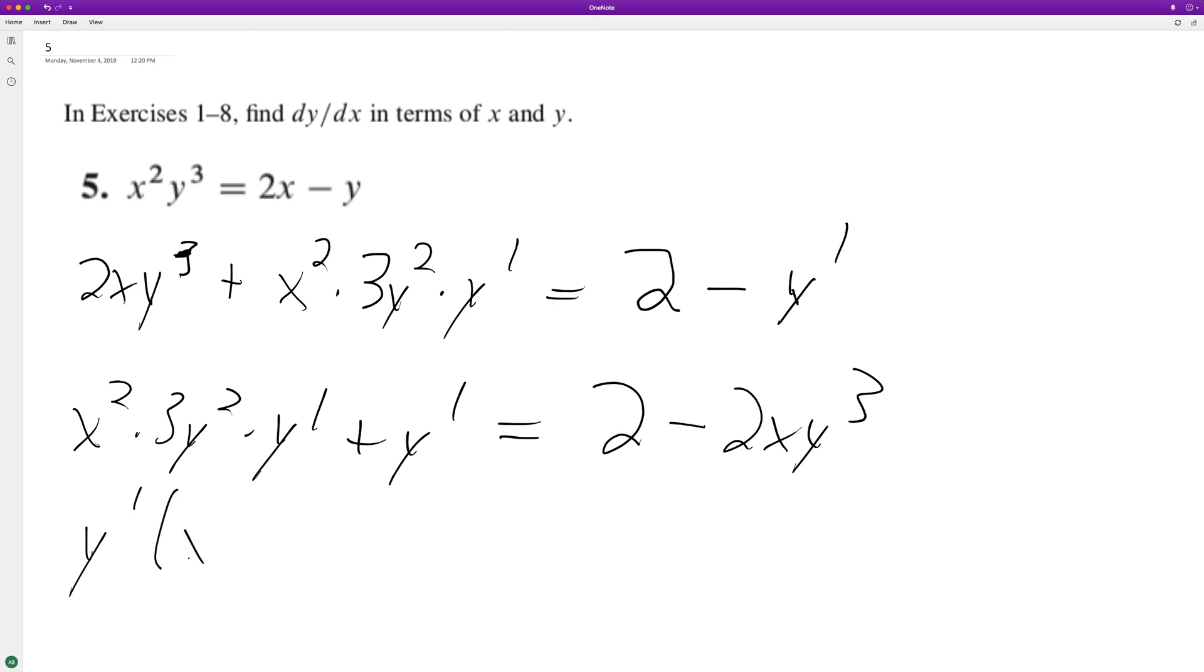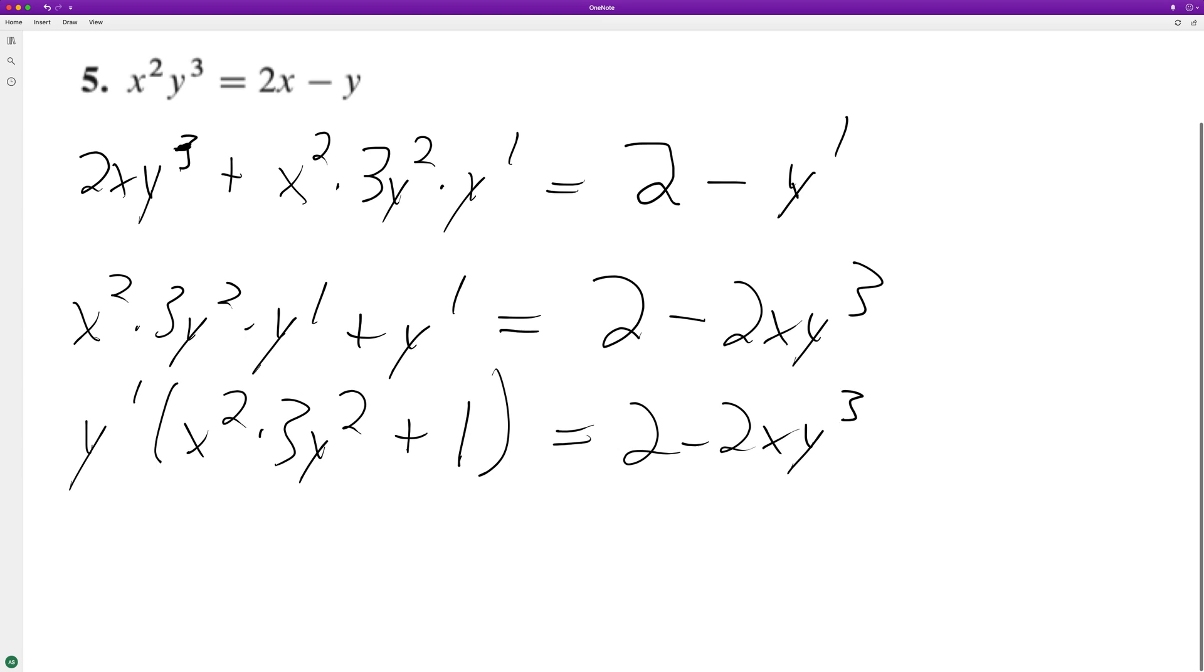Factoring out y', we get y'(x²·3y² + 1) = 2 - 2xy³. Now just divide through.